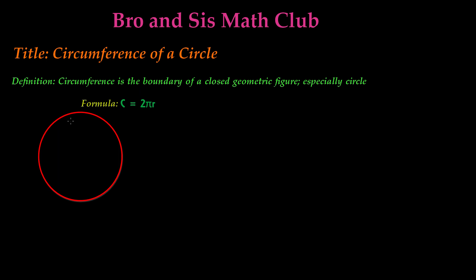Well, the formula for finding the circumference of a circle is C, which is equal to circumference. So circumference is equal to 2 times pi times r.